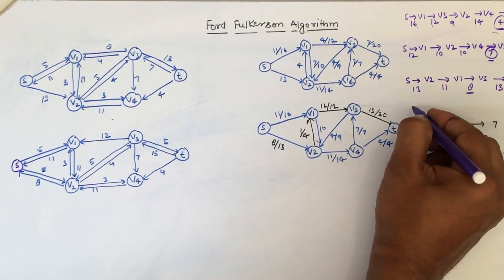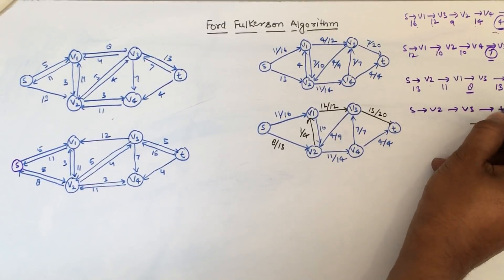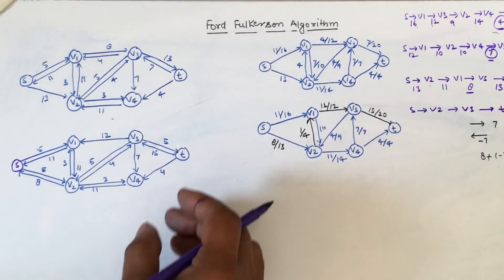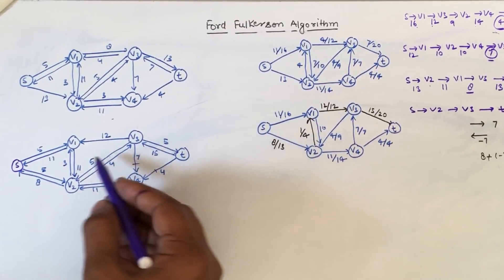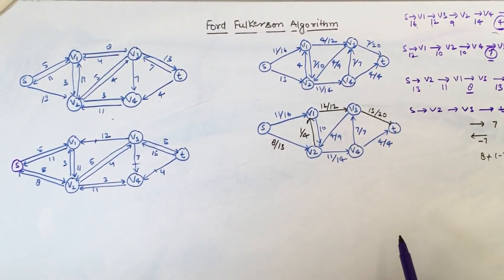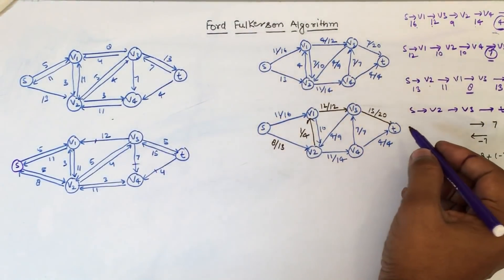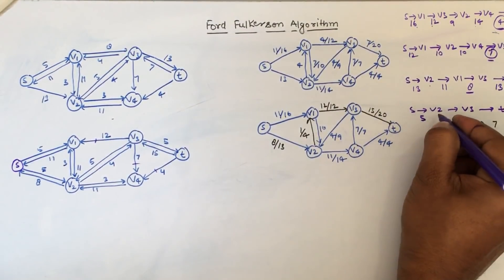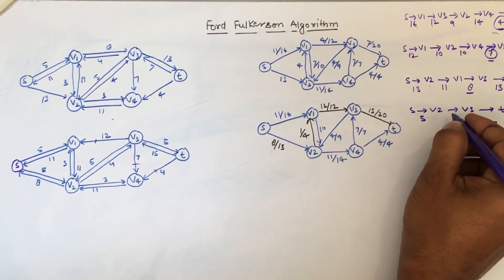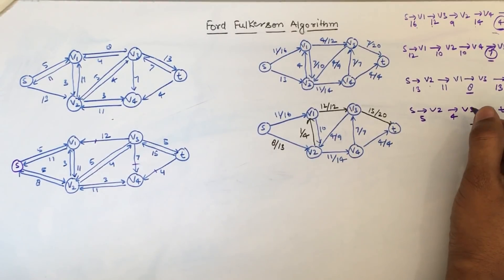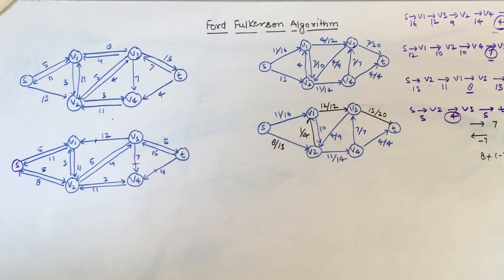For the next augmented path, we consider s to v2, v2 to v3, and v3 to t. We cannot take any path that has used all capacities — so we cannot go from v3 to v4 or from v1 to v3. We choose only paths with residual capacity. From s to v2 there is residual capacity 5, from v2 to v3 the residual capacity is 4, and from v3 to t the residual capacity is 5. The bottleneck capacity is 4, so we insert 4 more units.